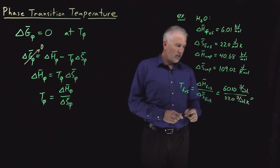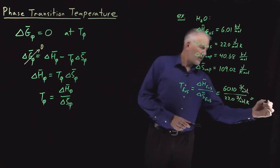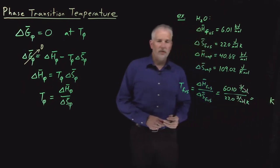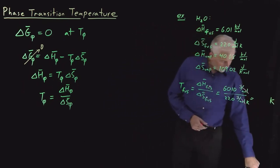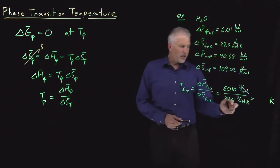Moles cancel. One over one over kelvin gives me units of kelvin, as the temperature should be. And that ratio, it won't surprise you to learn that if you divide 6,010 by 22, that will come out to be 273 kelvin.